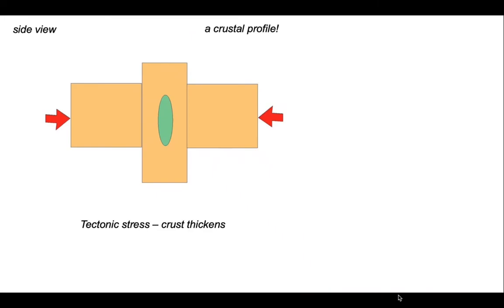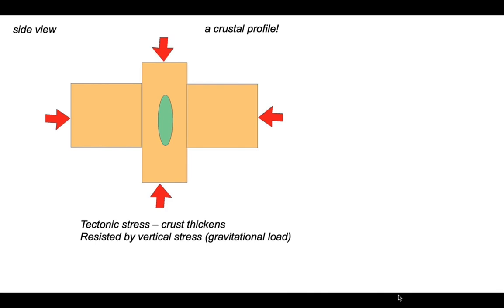Let's start off with this simple idea of thickening the crust. We've got a side view of a crustal profile. The deformation is driven by the maximum compressive stress being horizontal, but it's being resisted by the vertical stress, which is imposed by the gravitational load — not only by the topography created by the deformation, but also by the buoyancy of the thickened crust.